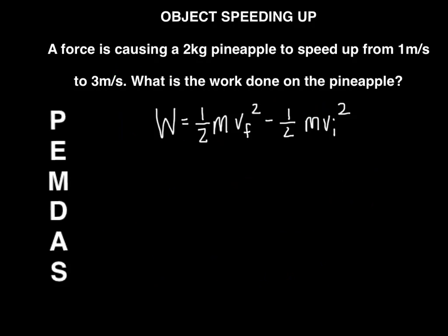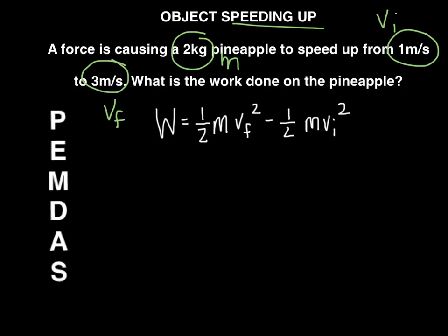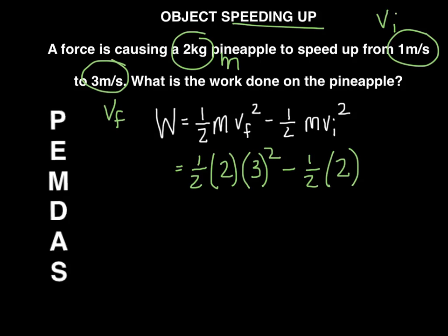Let's look at an example where an object is speeding up. A force is causing a 2 kg pineapple to speed up from 1 m/s to 3 m/s. What is the work being done on the pineapple? We know 2 kg is the mass, 1 m/s is the initial velocity, and 3 m/s is the final velocity. Plugging in: work equals one-half times 2 times 3 squared, minus one-half times 2 times 1 squared.